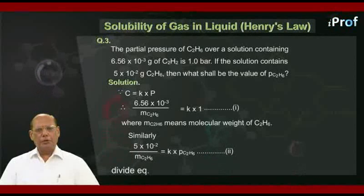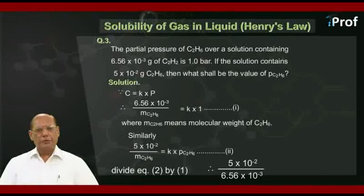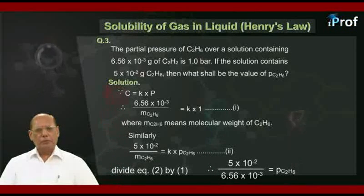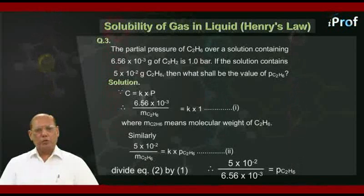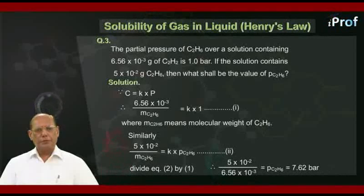Divide equation number 2 by equation number 1. We get 5 into 10 to the power minus 2 divided by 6.56 into 10 to the power minus 3 equal to pc₂H₆. Therefore, the partial pressure of C₂H₆ on calculation comes out to be 7.62 bar, and that becomes the answer of this question.